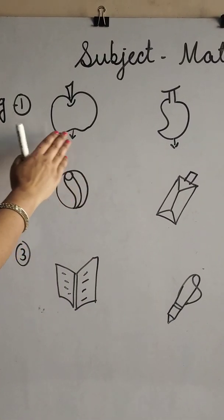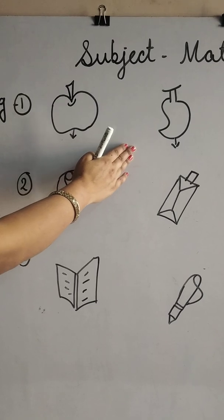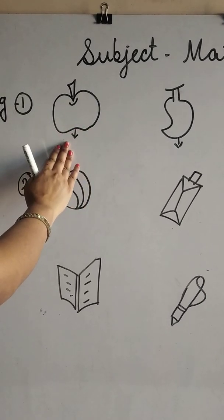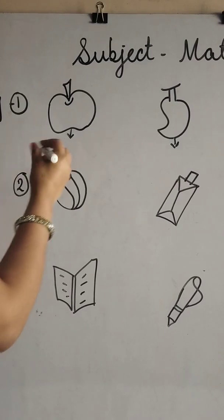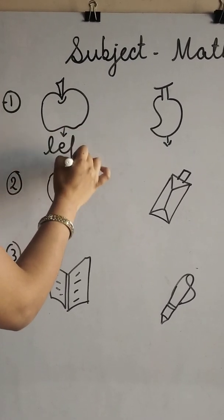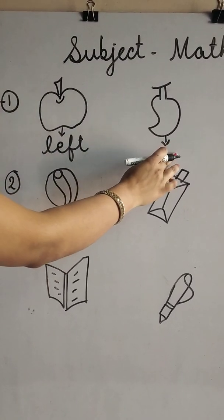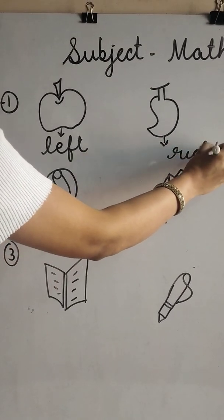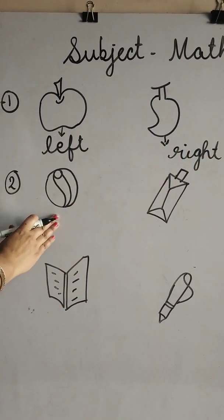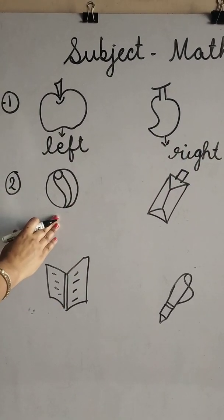Now students, see some examples. Apple is on left side. And mango is on? Yes. Mango is on right side. Ball is on left side.